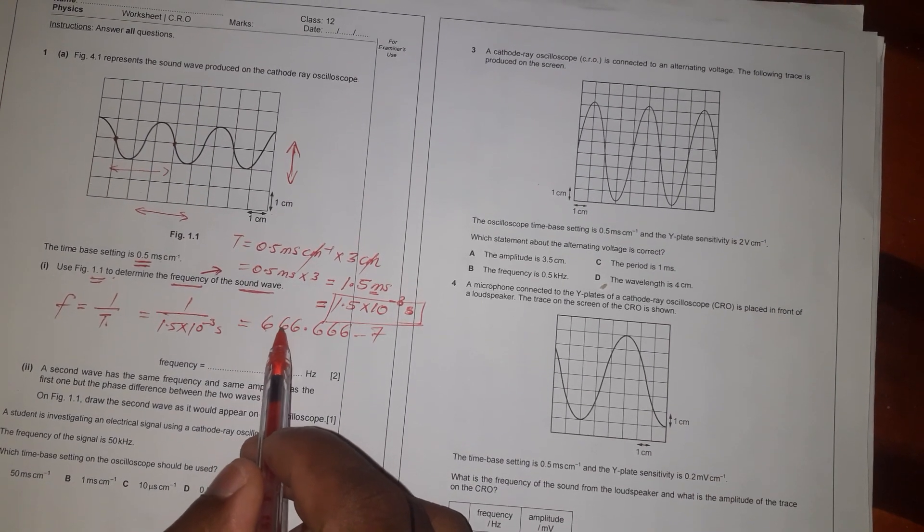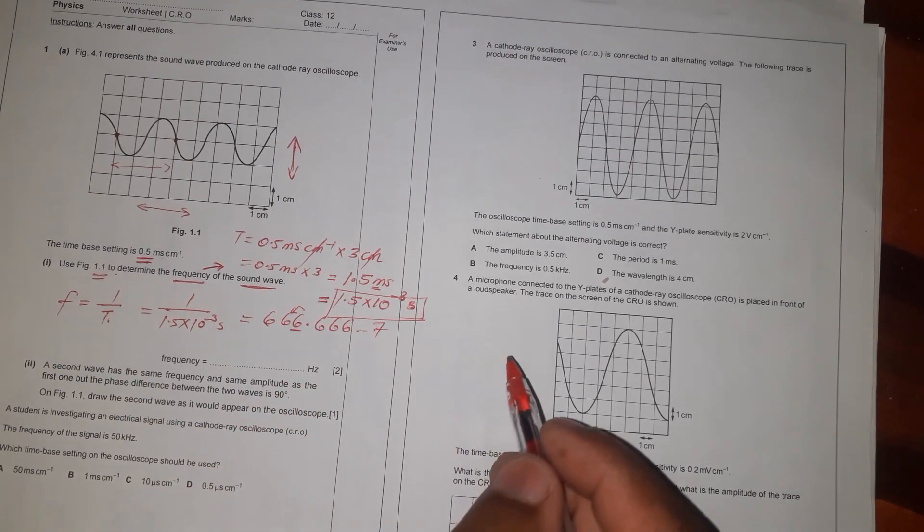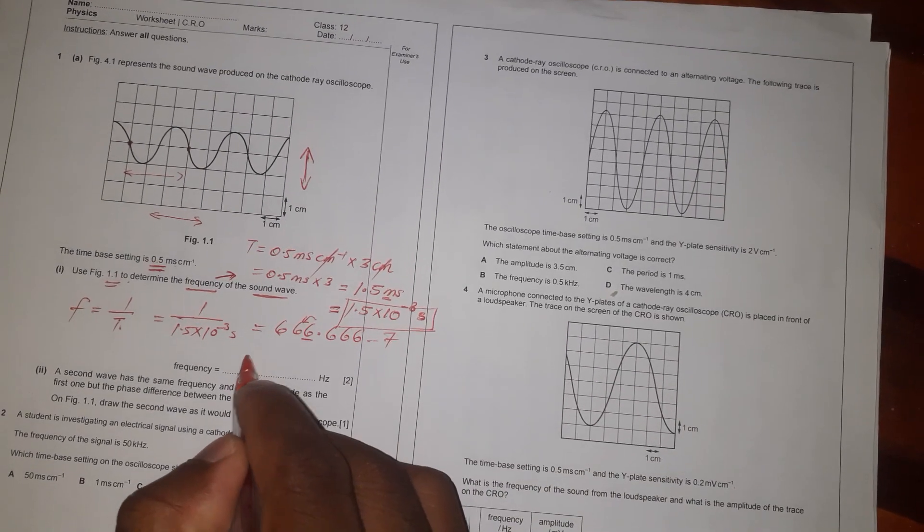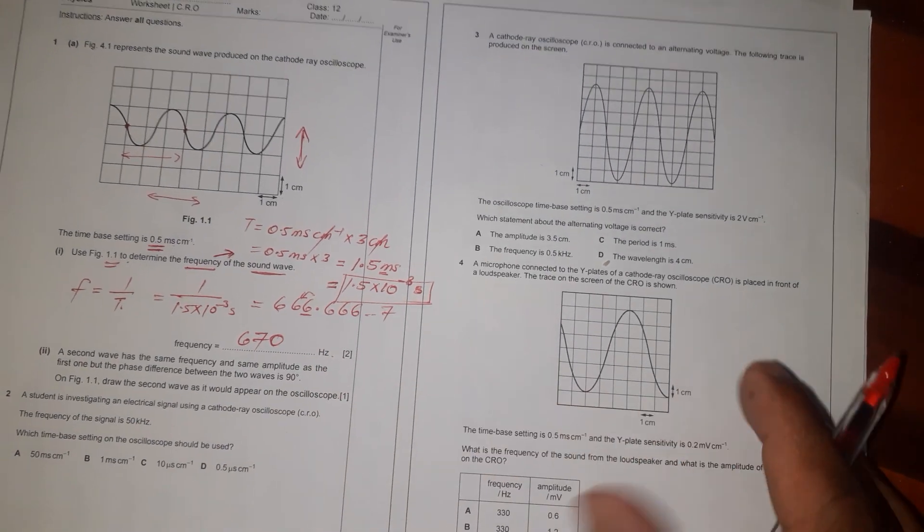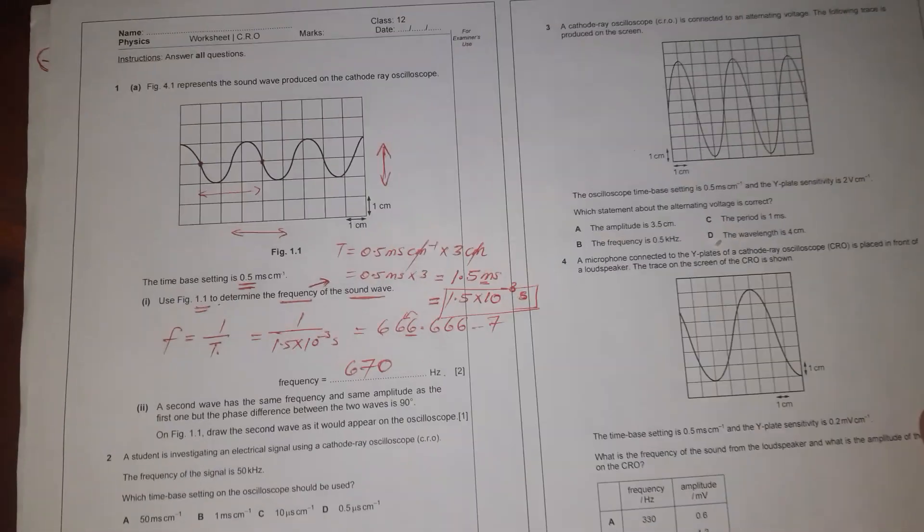Therefore one, two, then we look at this number here. It's more than five, therefore it can give one to six, and then to become 667 hertz. And that is the SI unit of frequency. So basically that's how you can actually calculate the frequency.